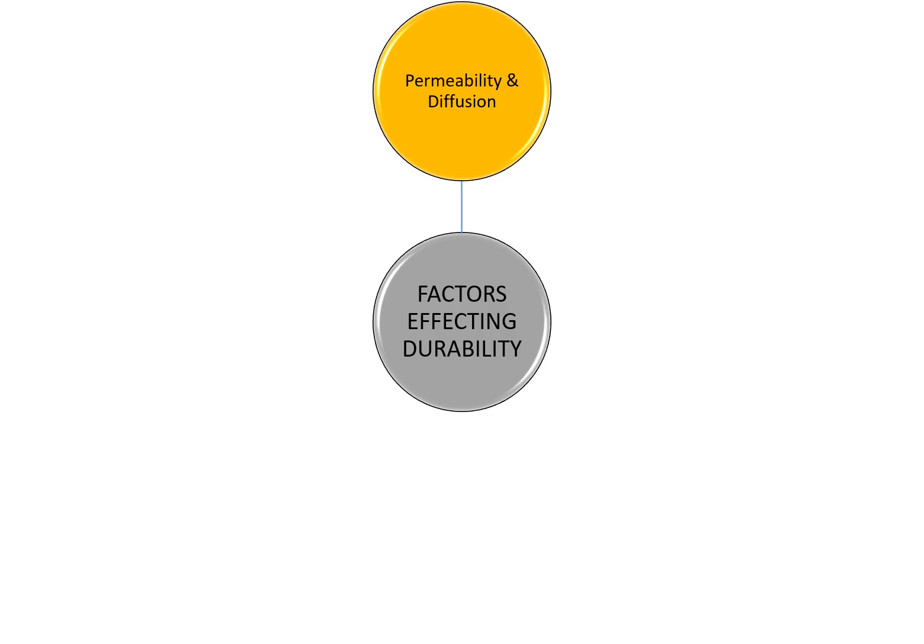The factors which are affecting the durability of concrete are permeability and diffusion properties. If the permeability is more, the durability is less, and if the permeability is less, the durability is more. These will be discussed in detail in understanding what is the definition of permeability and what is the definition of diffusion.